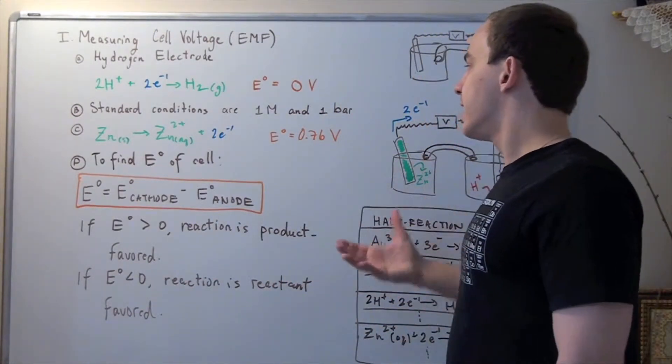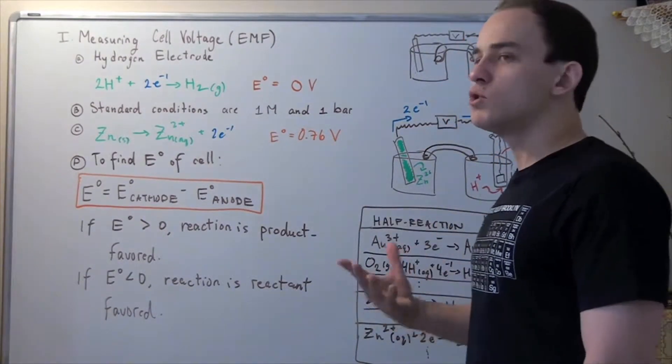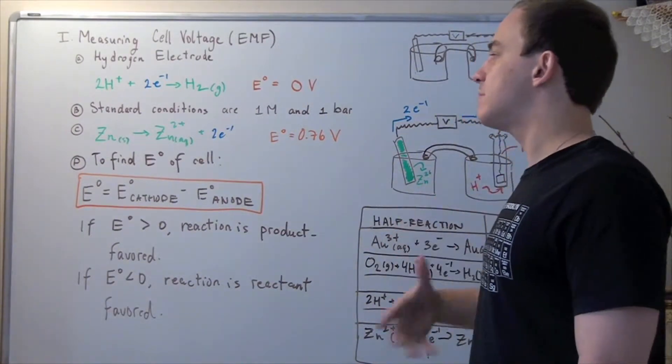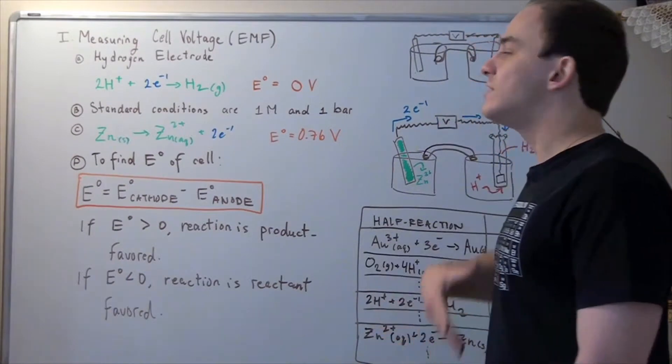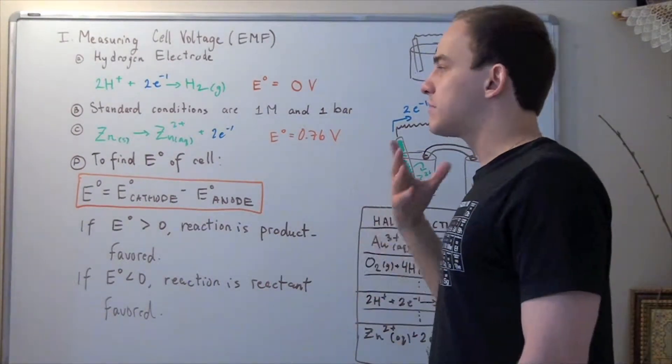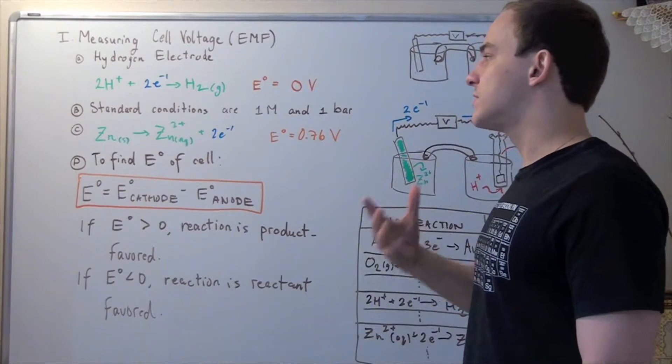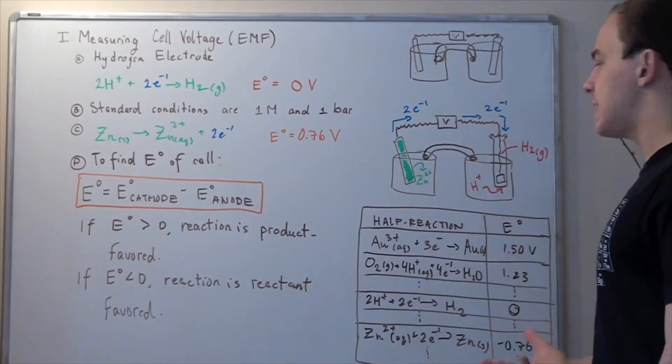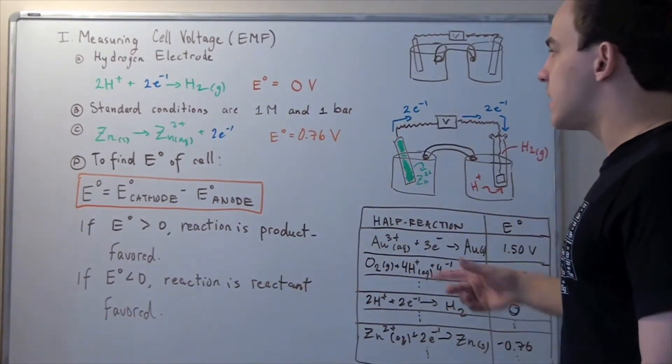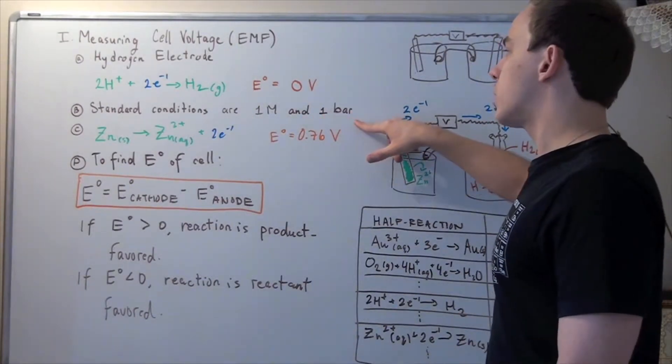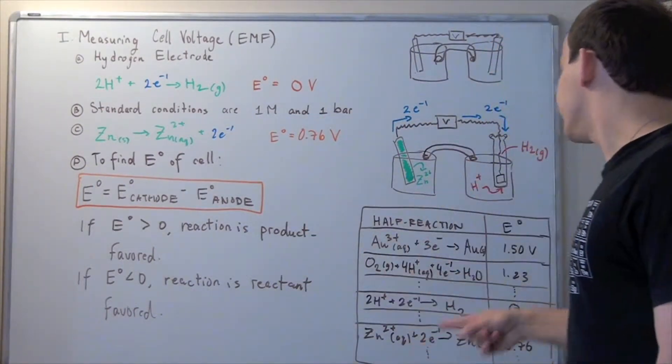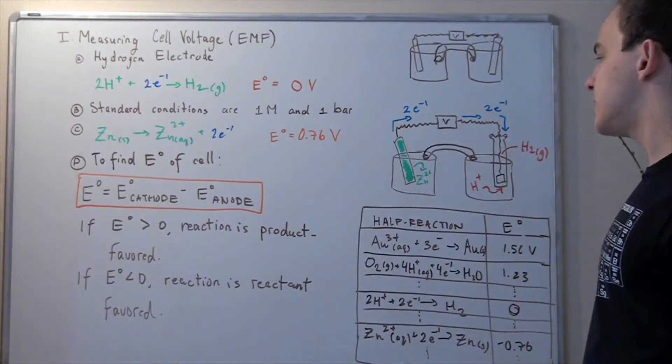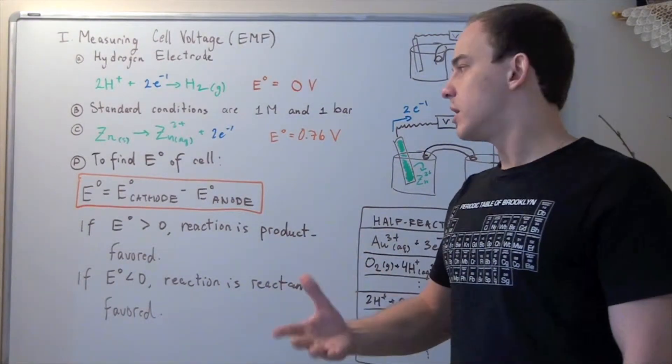Now we can tabulate the same cell voltages for different metals. Suppose we replace the zinc metal with a copper metal. We can calculate the same cell voltage for this copper, and so on. And after we calculate all the different metals and their respective cell voltages, we can create a table. And this table is called a reduction half-reaction table at standard conditions of 25 Celsius, one molar concentration, and one bar pressure. Now different temperatures will result in different cell voltages. And if you want to find a complete reduction half-reaction table, just check a chemistry textbook, or look it up online.